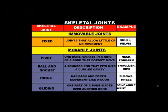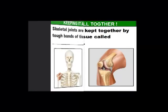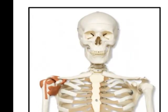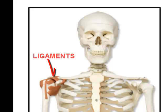The last topic we're going to talk about tonight is the materials that keep our bones together. Skeletal joints are kept together by tough bands of tissue called ligaments. Looking at the skeleton in the bottom left corner, you'll notice brown materials covering the top of the shoulder where the humerus enters the scapula — that's your ball and socket joint. Because of the range of motion it has, that joint needs to be held together by several ligaments.